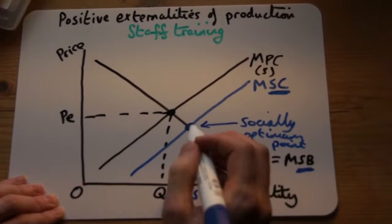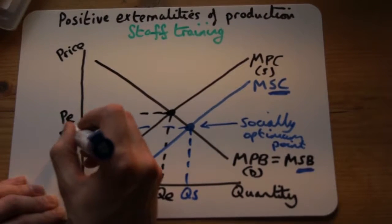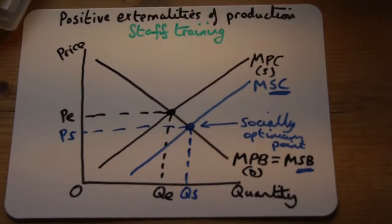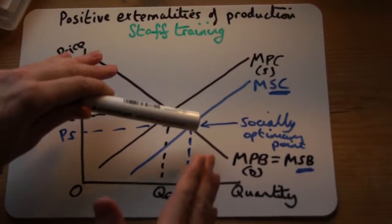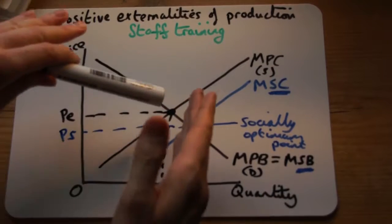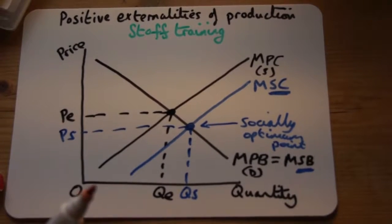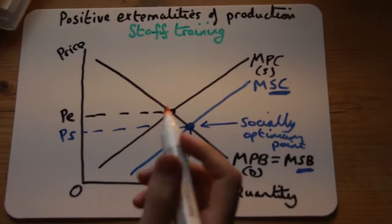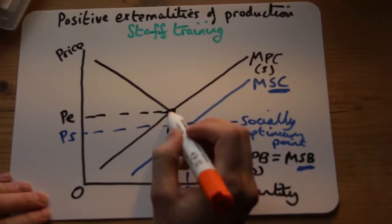At the socially optimum point, the quantity supplied should be much higher and the price of staff training should be lower. But we're not at that point — we're not at the socially optimum point. We are currently at the free market point.